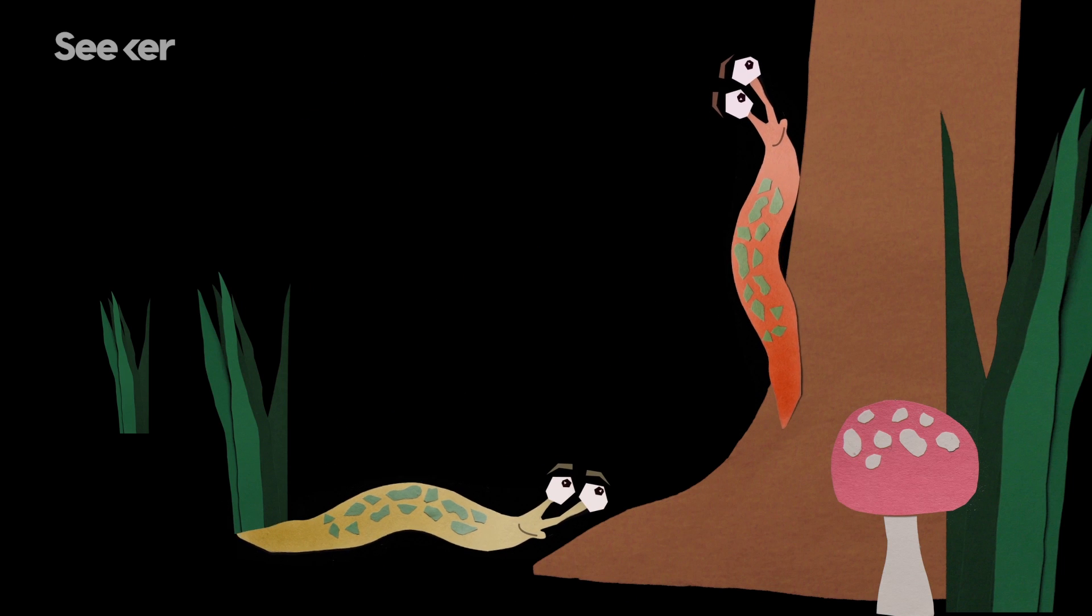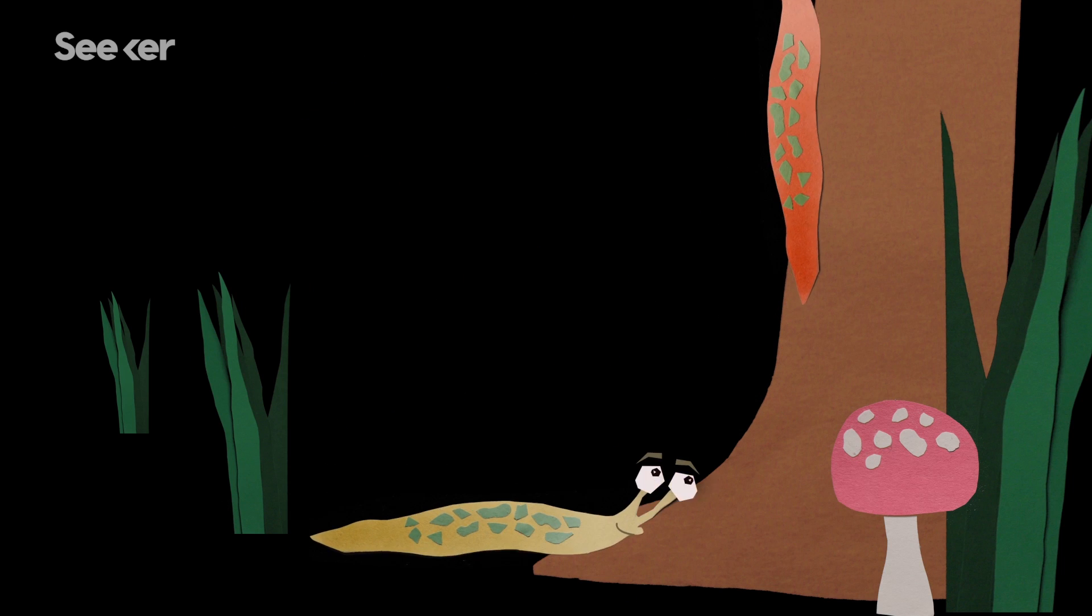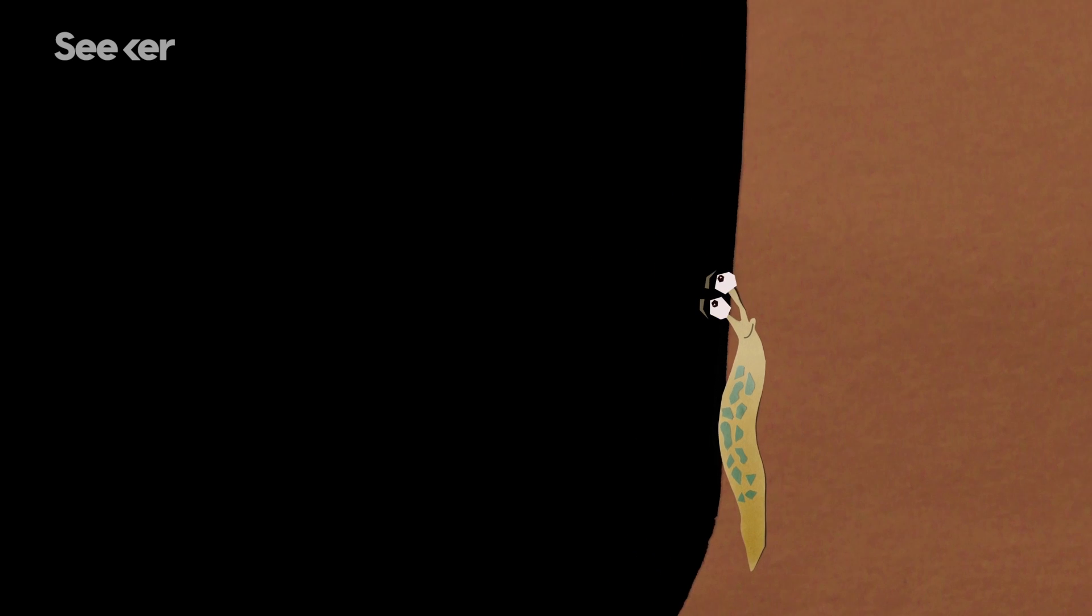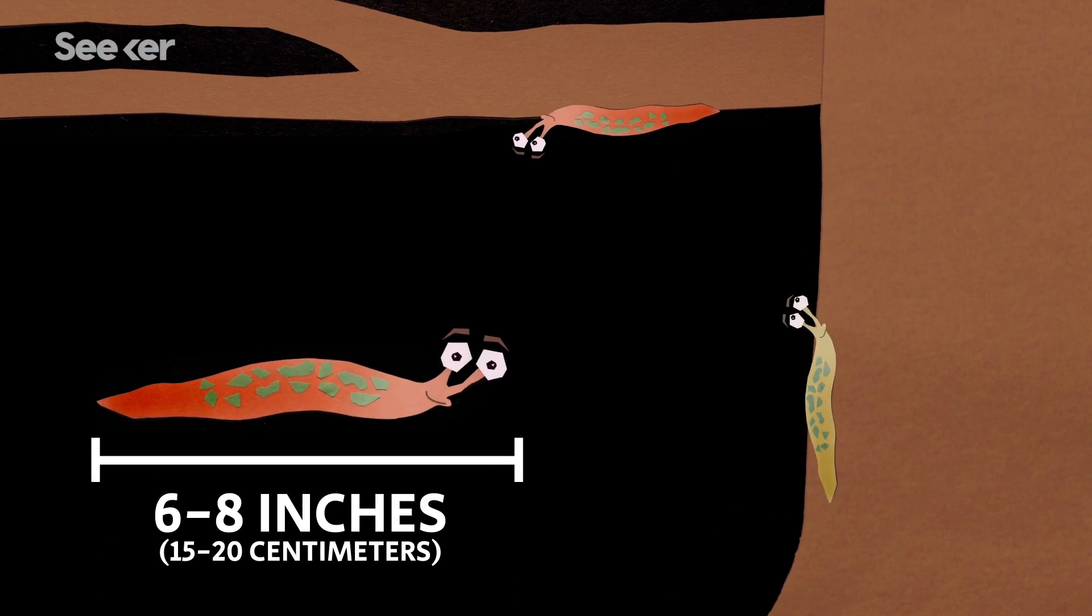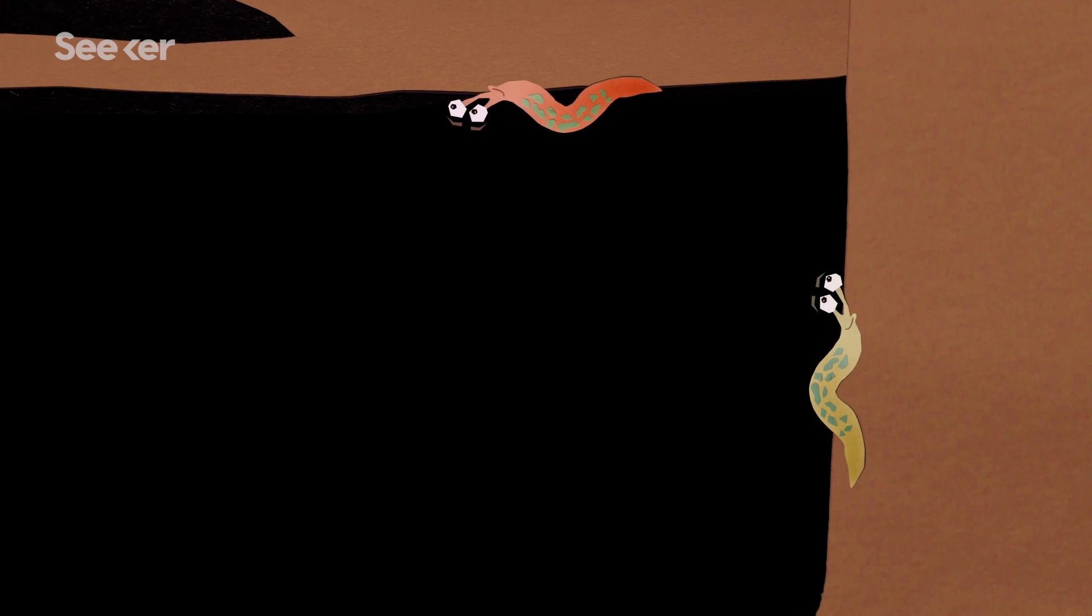After the blissfully slow Roomba, they find a nearby tree and climb it together. Slug penises are unusually large, nearly the size of their bodies, and so they need a little help from gravity during copulation.